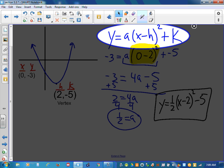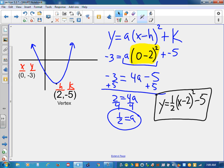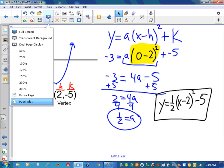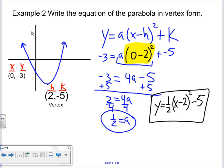A doesn't change. We found a to be a half. h was given because of the picture of the parabola, and k was given because of the picture of the parabola. So there we go. That's how you write the equation. Let me go full screen here. That's how you write the equation of a parabola in vertex form.